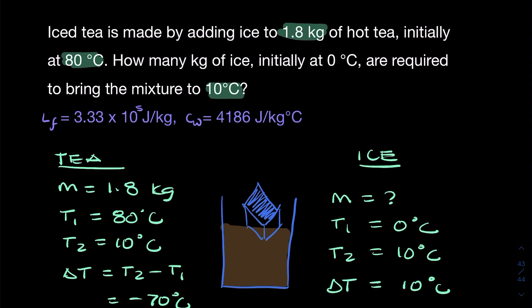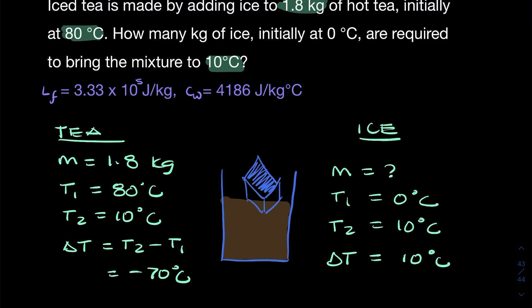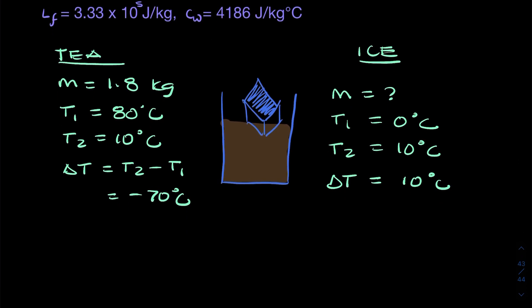And we also know the latent heat of fusion for the ice, and we know the specific heat capacity of water, which we will use for the ice after it's melted and we can also use for the tea because the tea is basically just water. So the most important expression we need here is the first one.